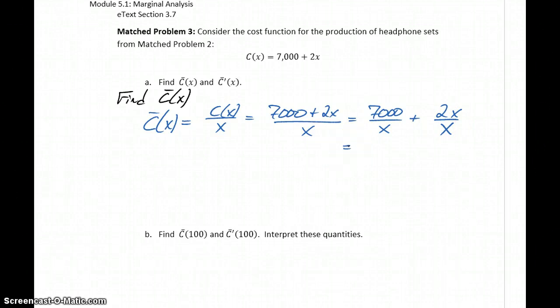We want to split that up into the sum of two fractions and now we'll just simplify a little bit here. x over x is going to cancel out and we can rewrite 7,000 over x as 7,000 x to the negative 1 so that it will fit our derivative properties better plus 2. So that's our average cost function.